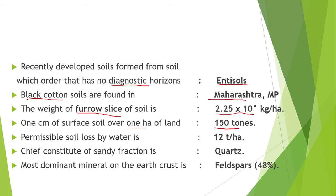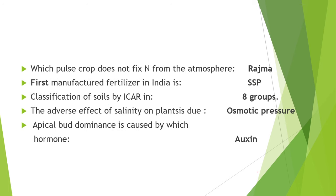The permissible soil loss by water is 12 tons per hectare. The chief constituent of sandy fraction is quartz. The most dominant mineral on the earth's crust is feldspar — it is 48%. Next point is, which pulse crop does not fix nitrogen from the atmosphere? It is rajma.